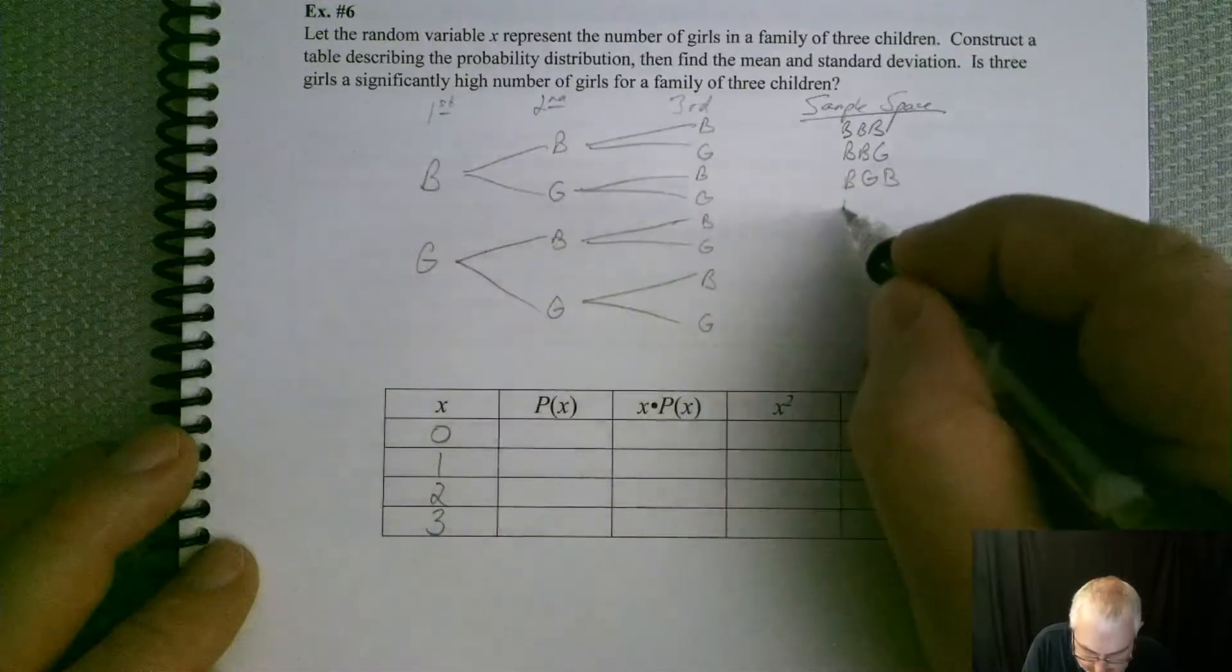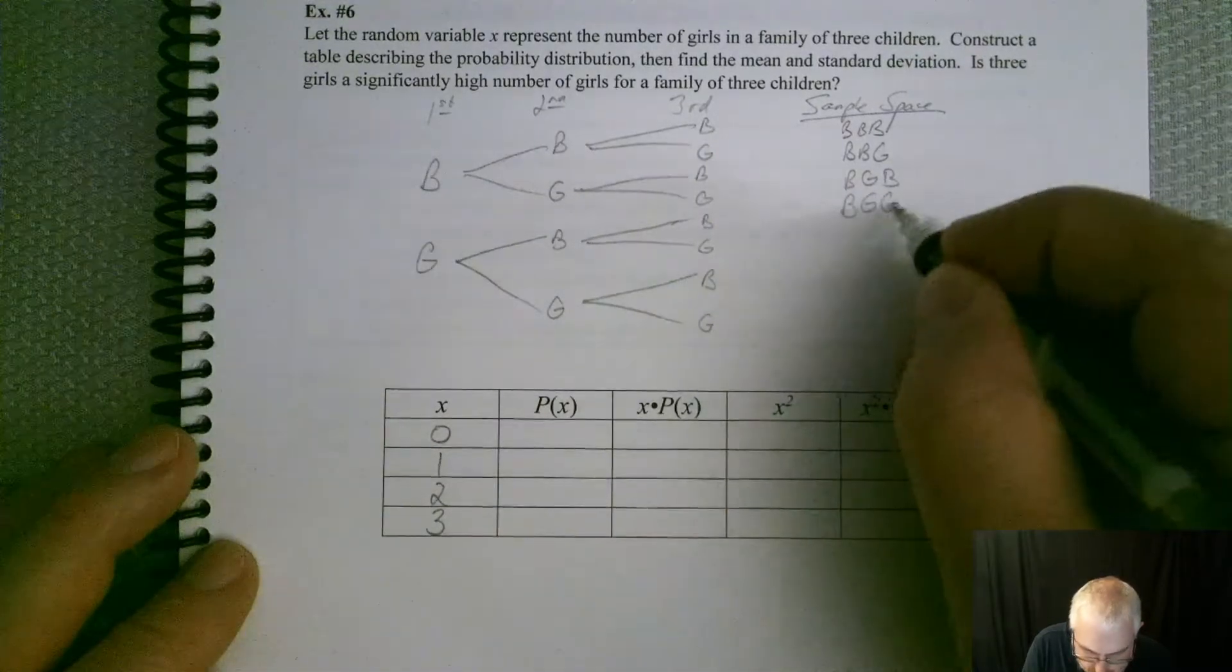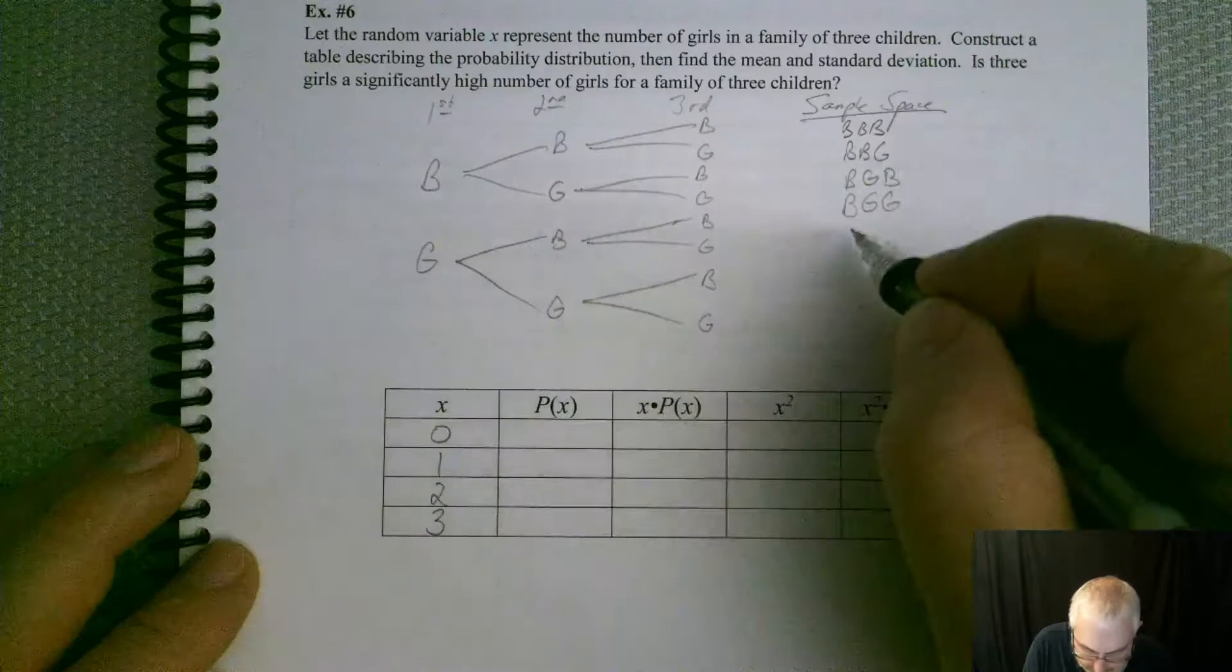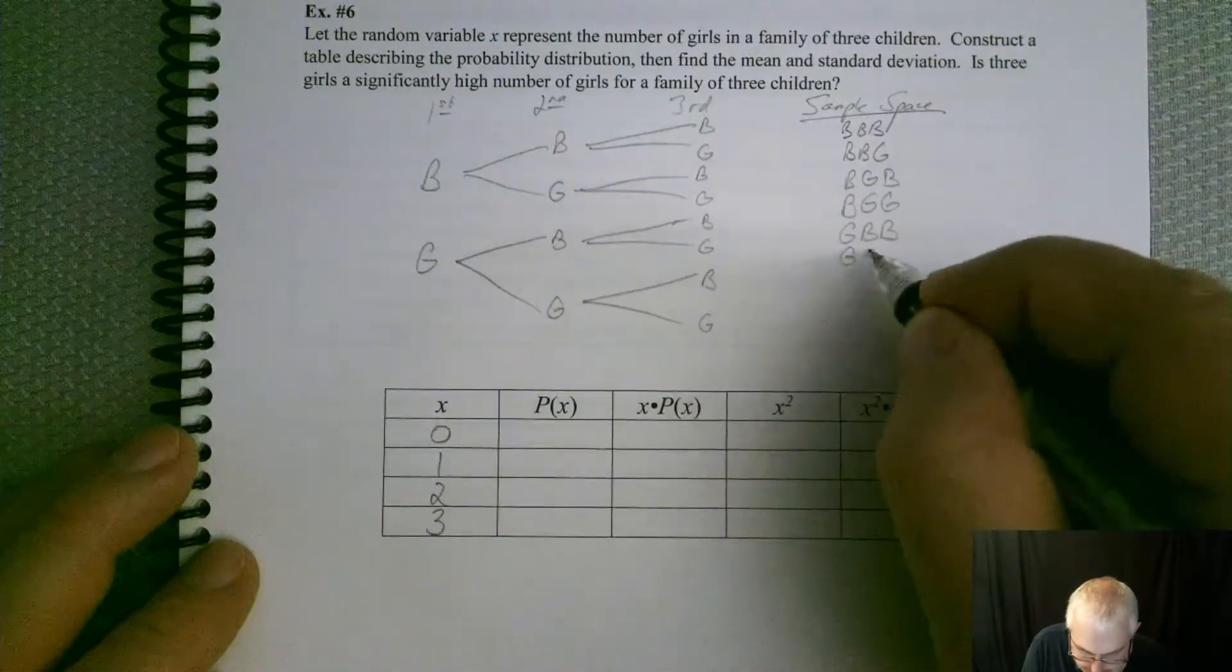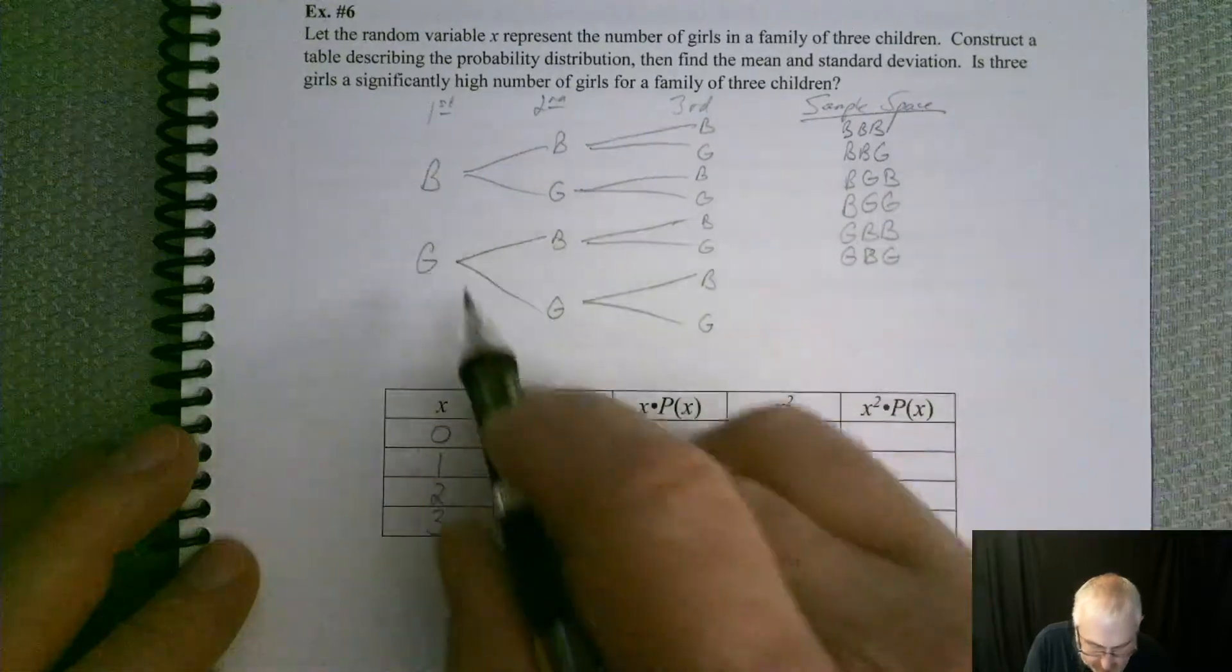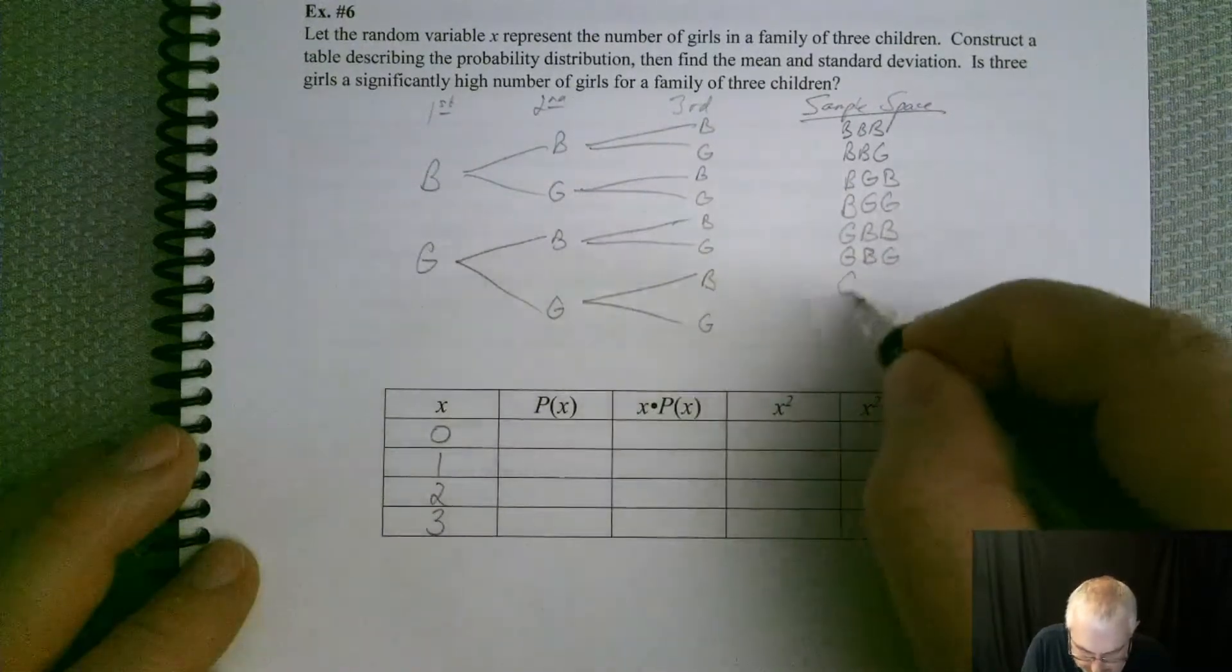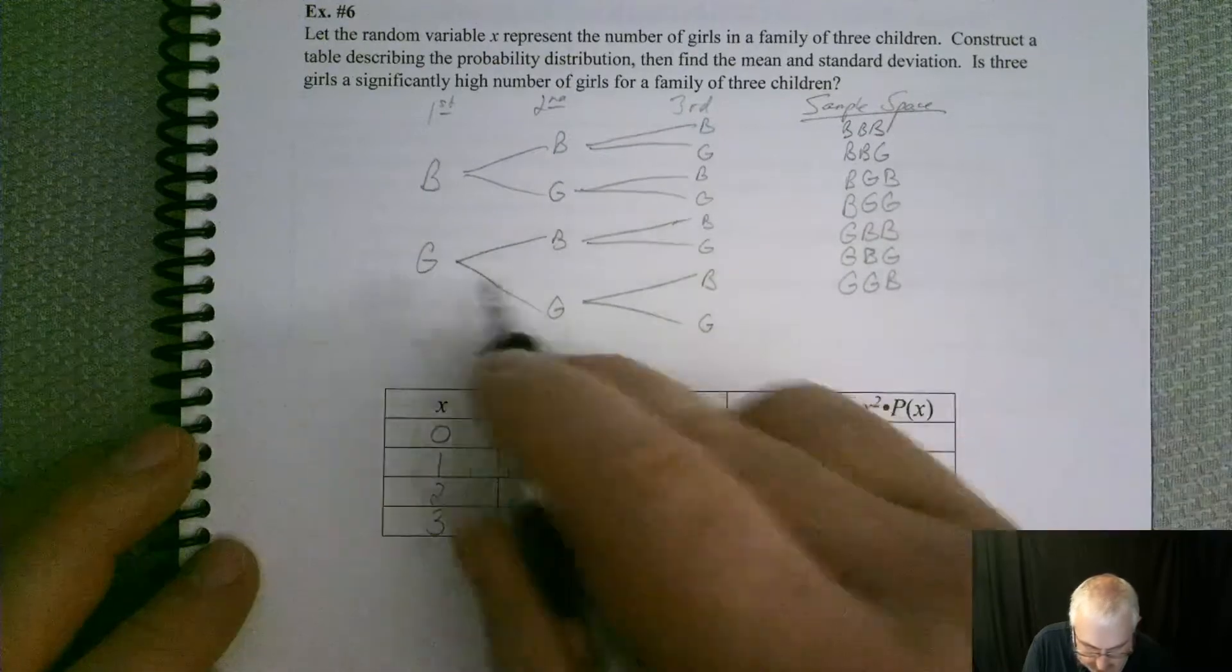Boy, girl, girl. Girl, boy, boy. Boy, girl, boy, girl. Girl, girl, girl, boy. And girl, girl, girl.